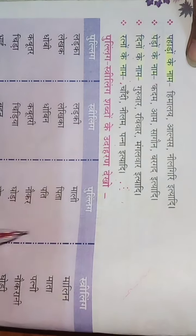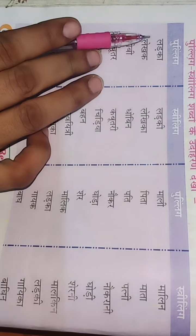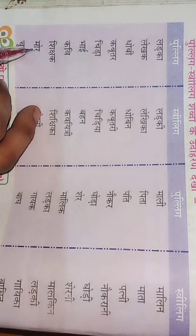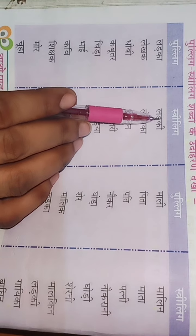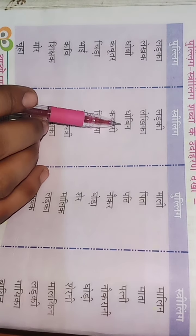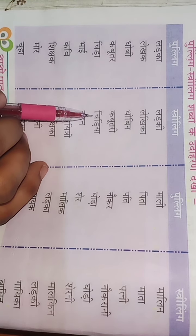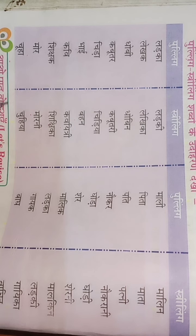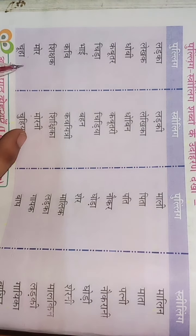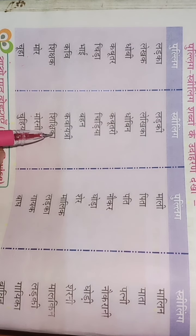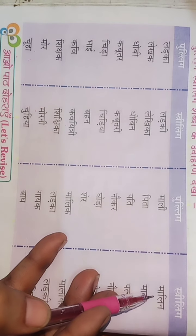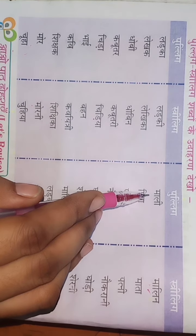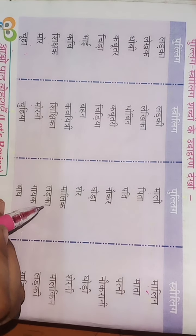Now we will see some word pairs. These are Pulling: larka → larki, dhobi → dhobin, kabutar → kabutri, chida → chidya, bhai → behen, kavi → kavitri, shikshak → shikshika, mor → morni, chuha → chuhiya. These are the masculine gender and these are the feminine gender. For example, 'malin' is Istri Ling — convert into Pulling: mali. Pulling hoga 'mali', Istri Ling hoga 'malin'.